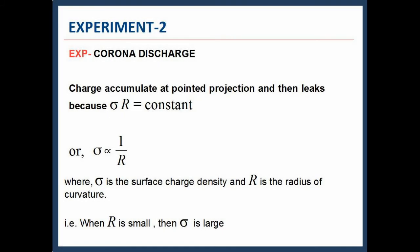Experiment 2: Corona discharge. Charge accumulates at pointed projection and then leaks because σR = constant, or σ ∝ 1/R, where σ is the surface charge density and R is the radius of curvature. That is, when R is small, then σ is large.